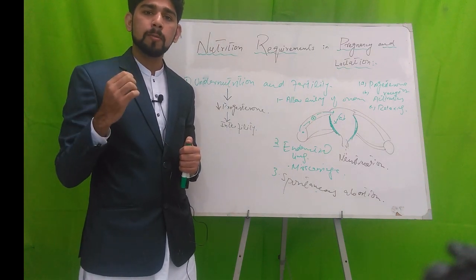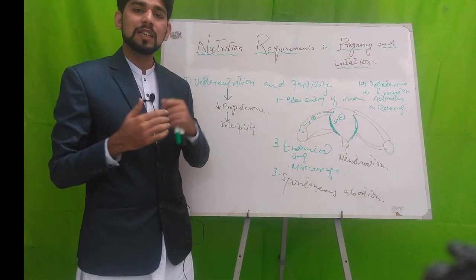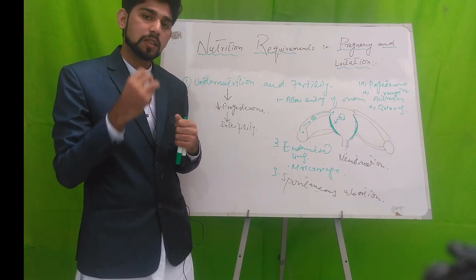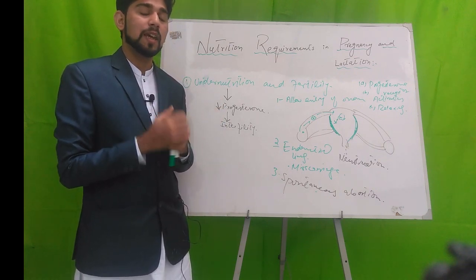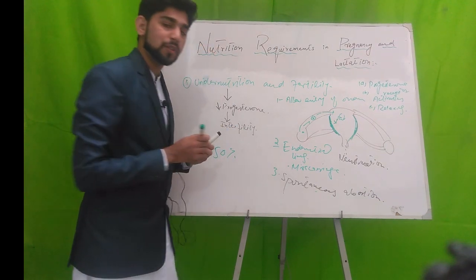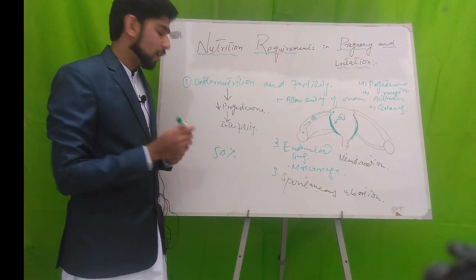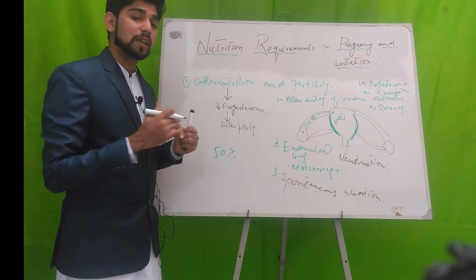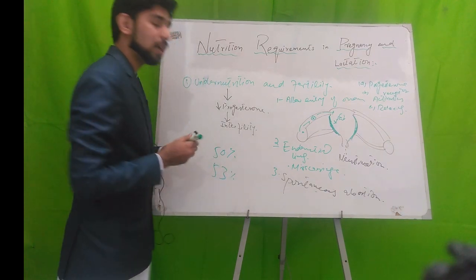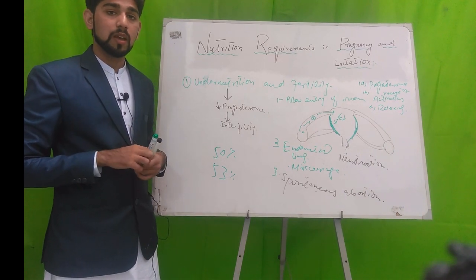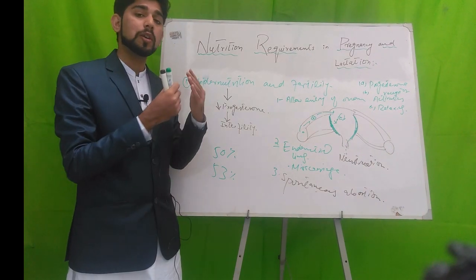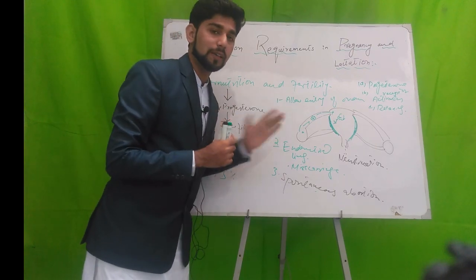The famine in Holland during World War II led to a decrease in calorie intake to less than 1000 kilocalories per day, which was associated with a 50% decline in fertility rate and a 53% decline in birth rate. Next, we will discuss how over-nutrition affects the fertility rate.